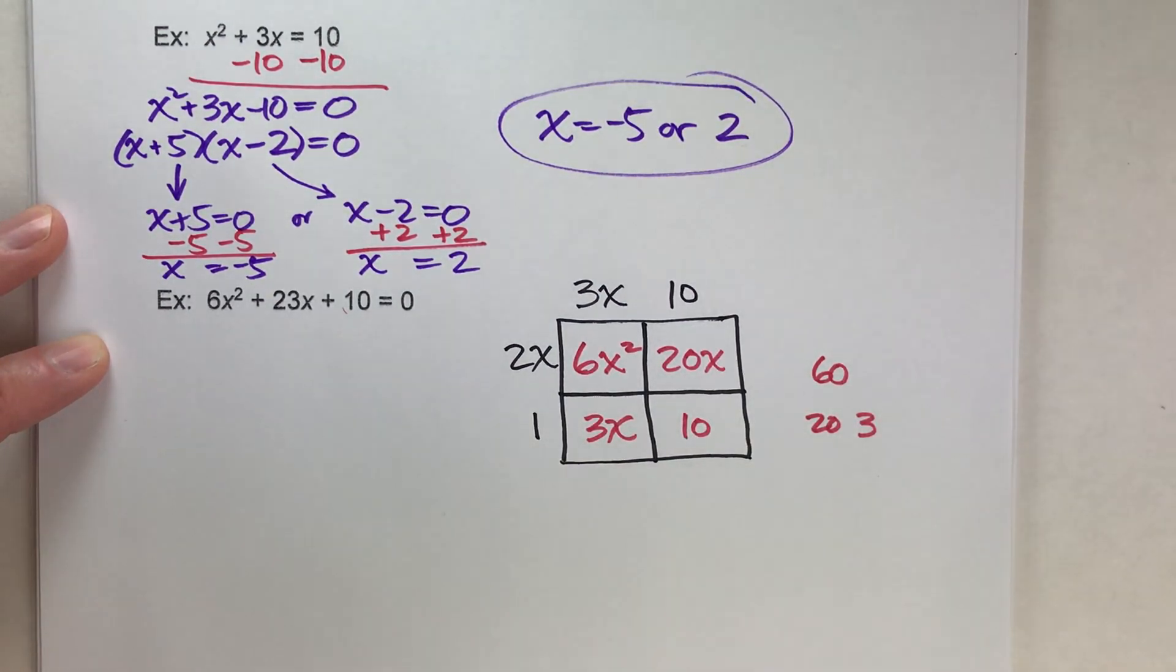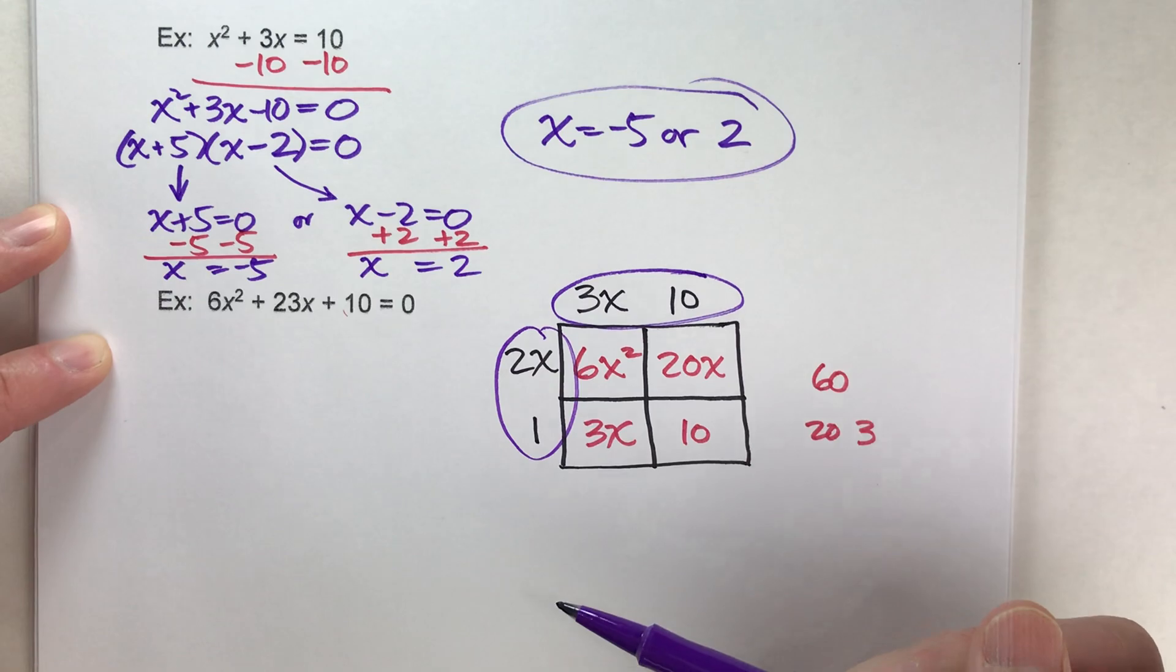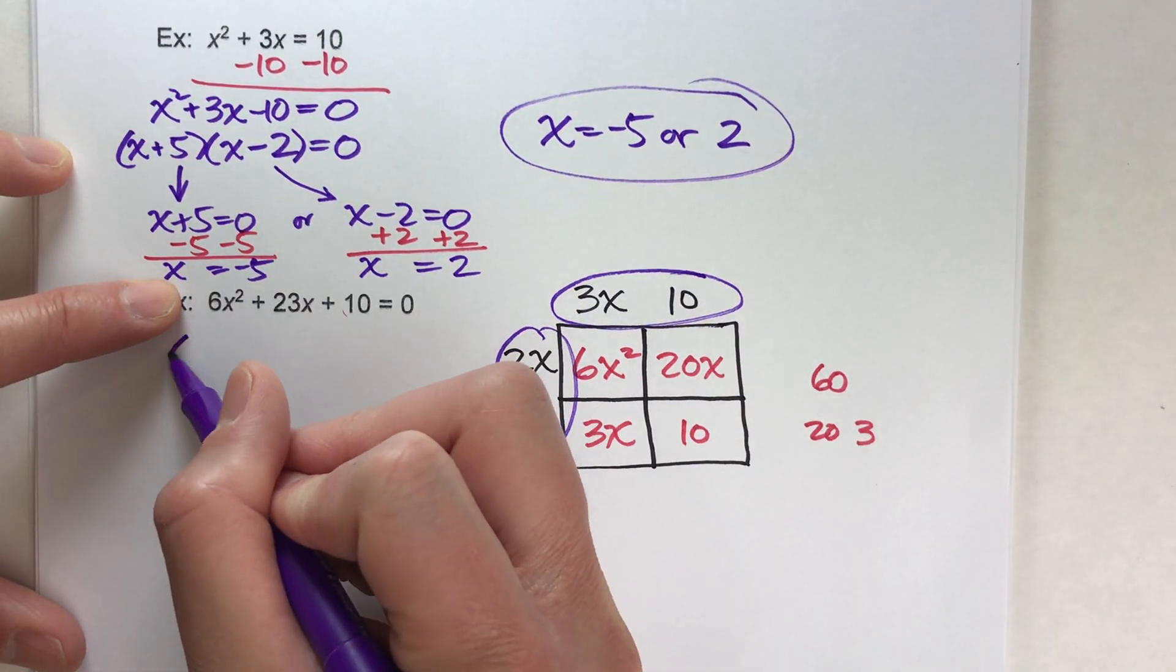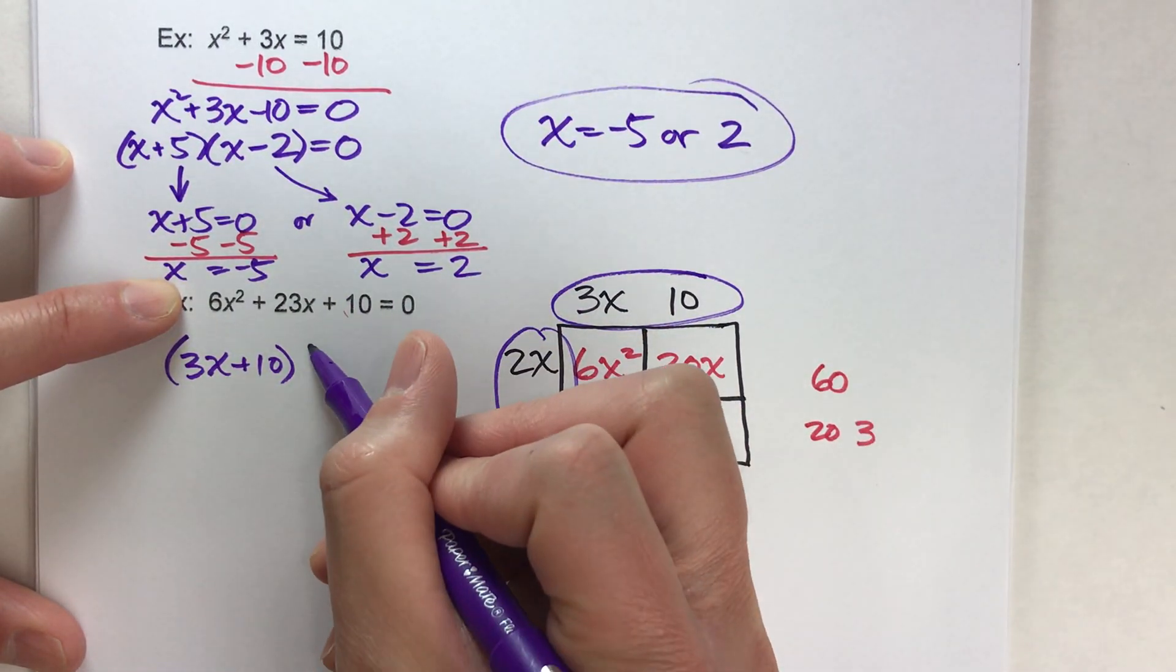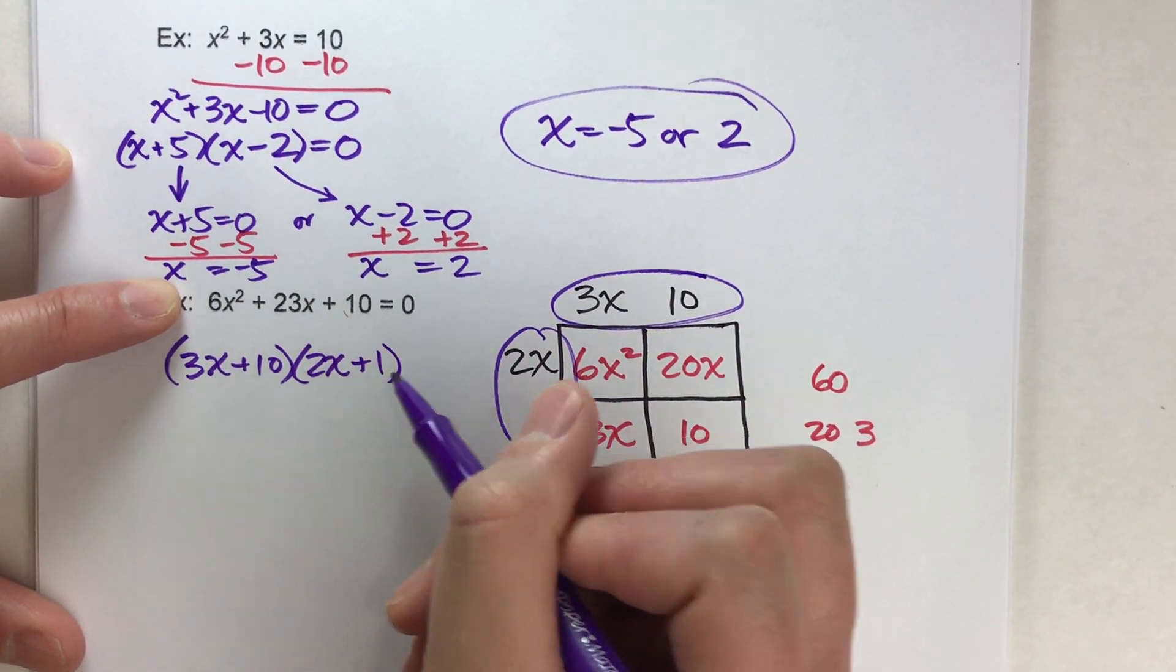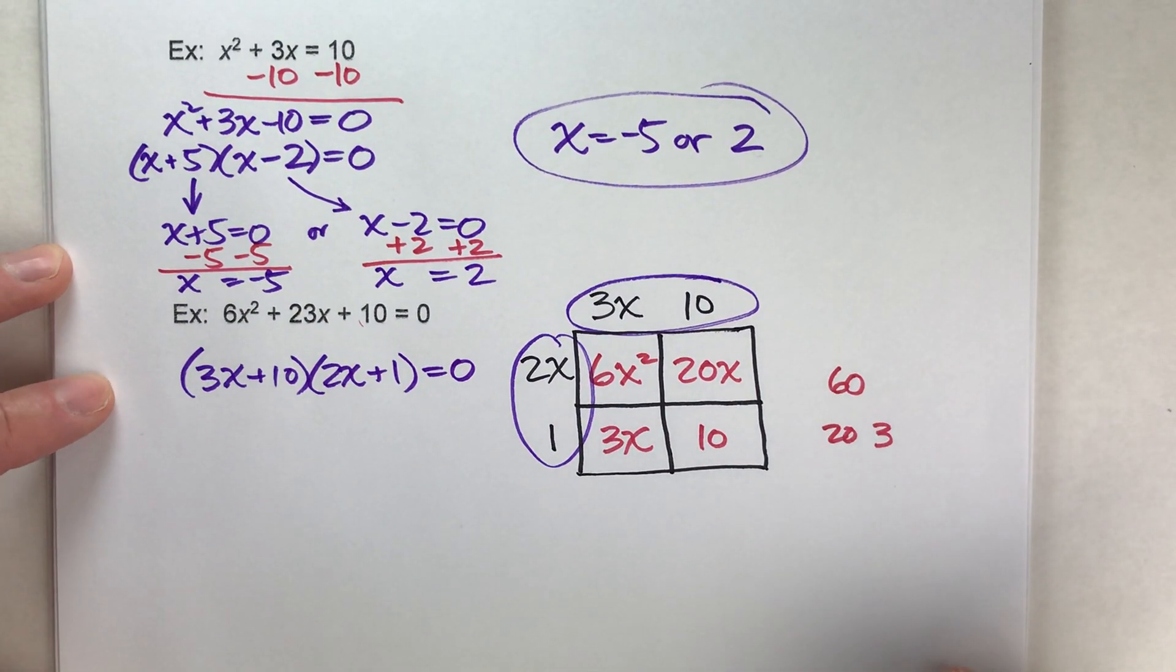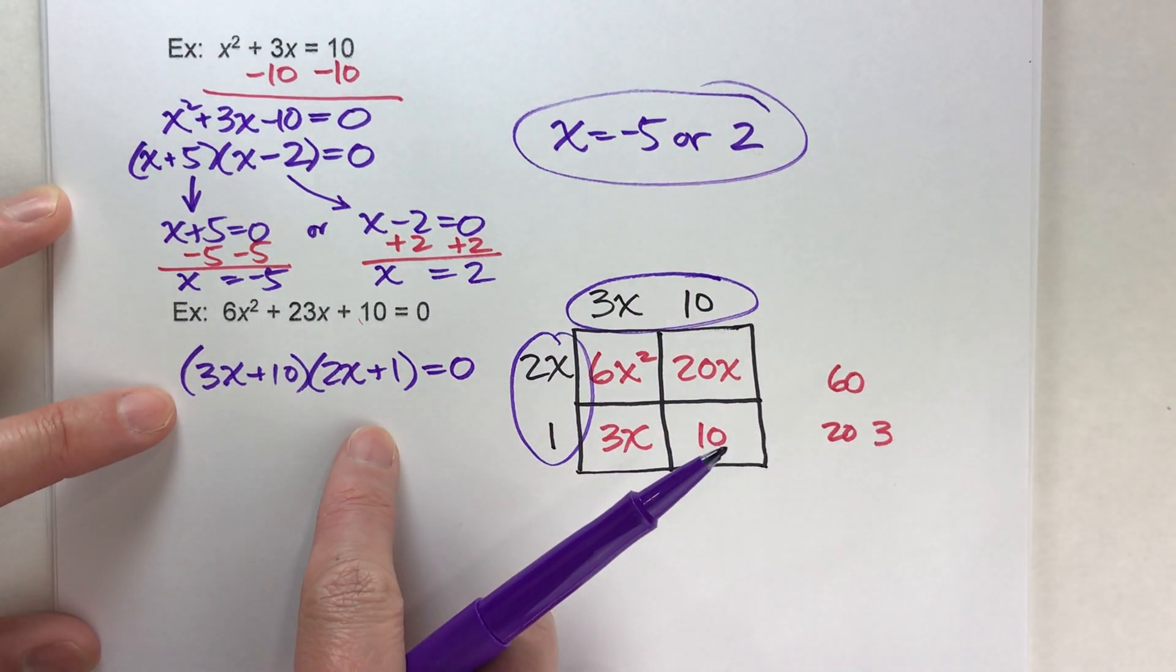So now we can factor this because these expressions on the side are the factors. 3x plus 10 is one factor and 2x plus 1 is the other, and of course it all still equals 0. That's the hardest part of this problem is getting to this point.